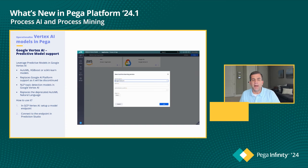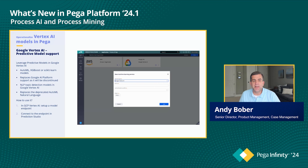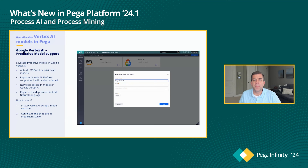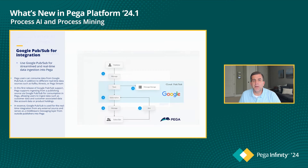Just a few quick things to highlight before we wrap up. First, we've updated our Google Vertex AI integration. We support a number of different provider models and cloud providers, including AWS SageMaker and Google Vertex, and we've updated the Google integration to ensure we support their latest integrations. We have also added support for Google PubSub, which is an event streaming platform providing capabilities similar to Kafka and Kinesis, offering more flexibility in terms of the providers you can integrate Process AI with.